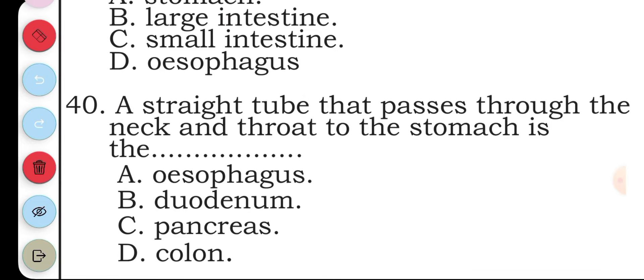Question forty: a straight tube that passes through the neck and throat to the stomach is the: A oesophagus, B duodenum, C pancreas, D colon. The answer to question forty is A, oesophagus.